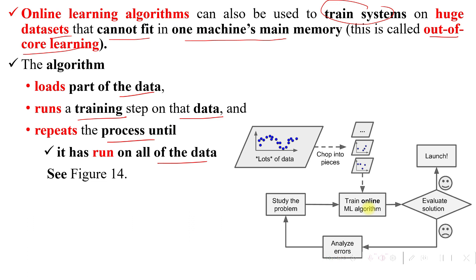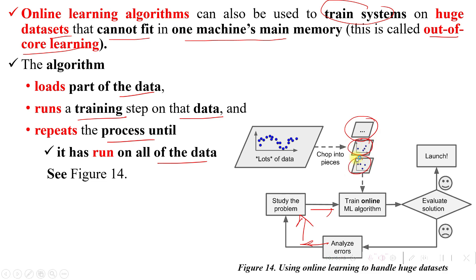Our model trains on one batch of data at a time and then we make predictions. If results are perfect we stop; otherwise we analyze and update, and this process continues until all the data has been used. This is called online learning.